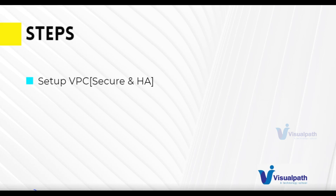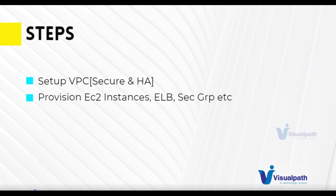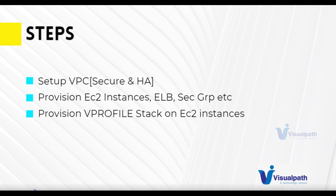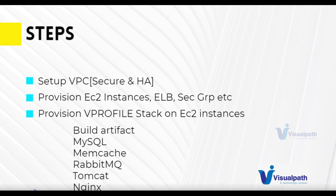The entire execution is three-fold. First, we set up the VPC, which we already did in our previous project — we'll pull that code from our repository and execute it to set up the entire VPC stack. Second, we provision EC2 instances, a load balancer, and security groups for all the vprofile services — MySQL, Memcache, RabbitMQ, Tomcat, and Nginx. Third, we provision the entire vprofile stack on those EC2 instances: install services, configure them, build artifacts, and set up MySQL, Memcache, RabbitMQ, Tomcat, and Nginx.